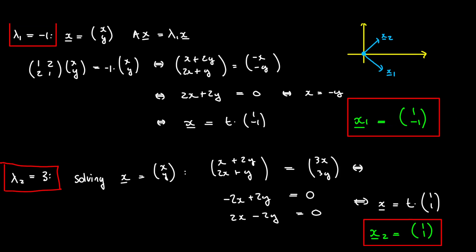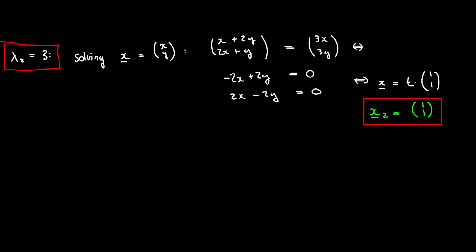To finish this calculation, let's tabulate what we've got. We have lambda₁ equal to negative 1 with eigenvector x1 = (1, -1), and lambda₂ equal to 3 with eigenvector x2 = (1, 1). This is all we need to diagonalize our matrix.